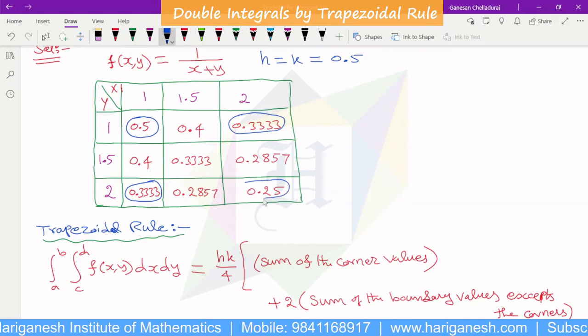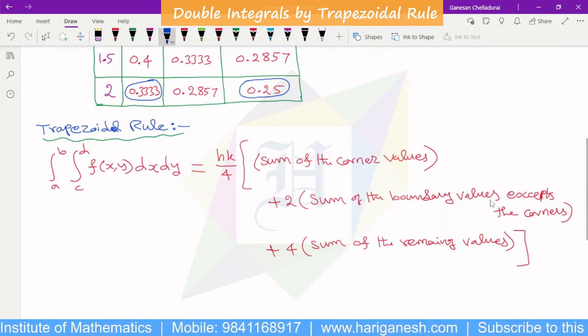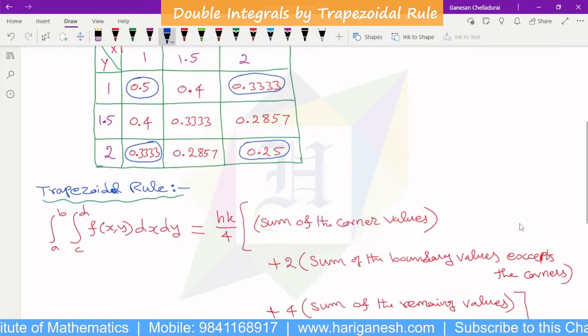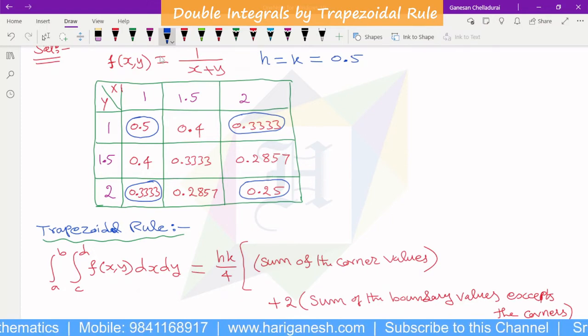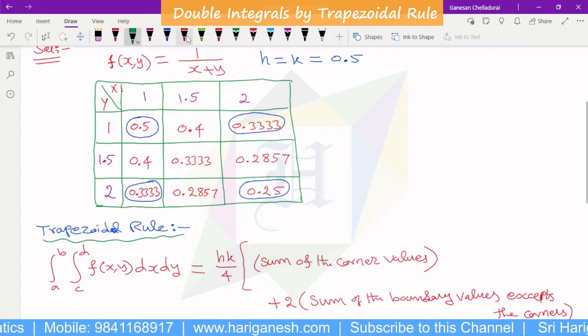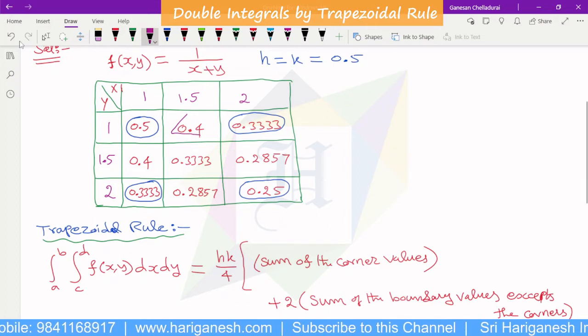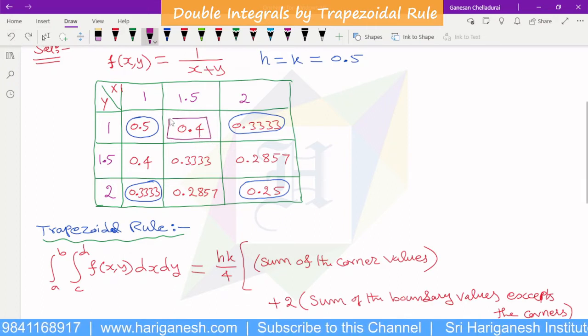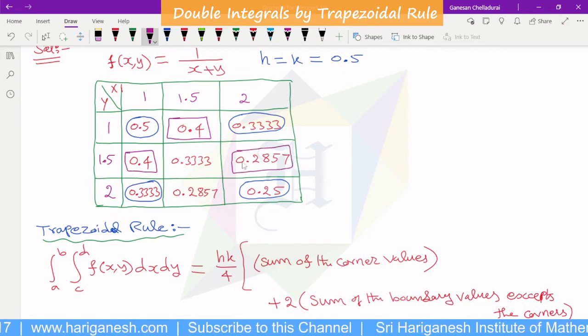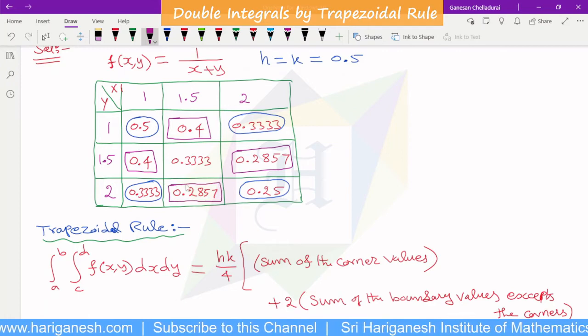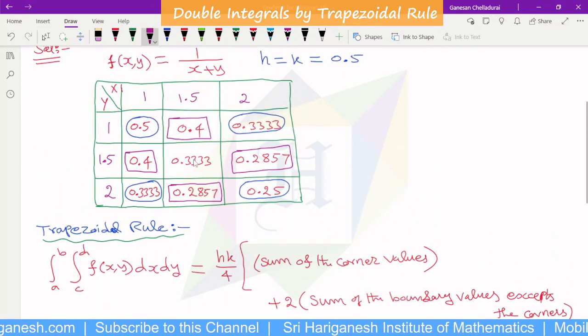So, these are all sum of the corner values plus two times of sum of the boundary values except the corner. So, in the boundary layer, this is the boundary. In the boundary layer, value add up, except corner. At the point, 4 times of sum of the remaining value, this is the remaining value. That's the answer.